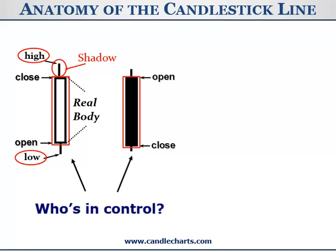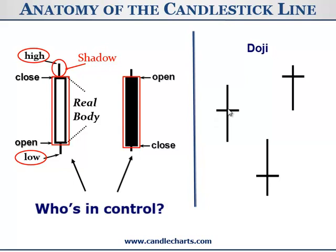Now as we get to what are called doji — that's when the opening and closing are the same — we ask ourselves the same question about who's in control. Who's in control during a doji? Is it the bulls? Is it the bears? Or something else? With the opening and closing the same, this tells us there's an equilibrium of forces between the bulls and the bears. And the Japanese will say the market is tired.